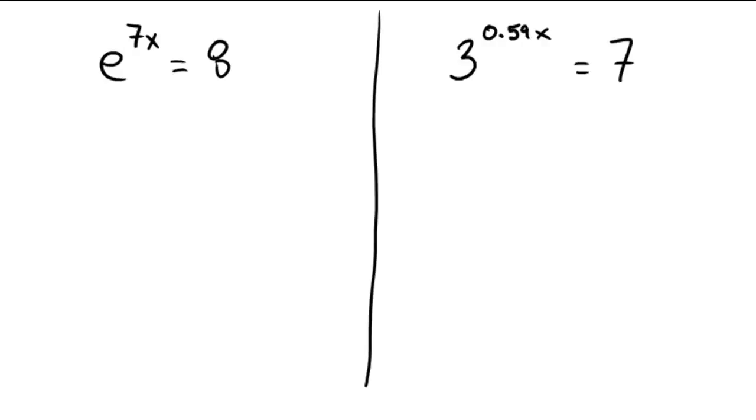the first one was an e as the base, so this one should be an obvious call to ln. ln e to the 7x equals ln of 8. So that means that 7x is equal to ln of 8.